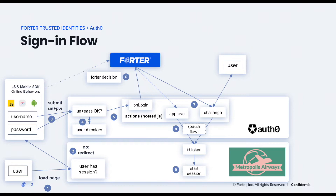The Auth0 action is JavaScript, hosted by Auth0, and it's the key piece of the seamless integration. The action sends the user context directly to Fortr, and Fortr responds with a recommendation to either allow the login, decline it, or challenge the user for a second factor. It should be noted that Fortr's recommendation is very accurate and greatly reduces the chances of an end user being challenged for MFA. If the user is approved or satisfies the MFA challenge issued by Auth0, then Auth0 issues an authorization code, and eventually an ID token to complete the authentication process.